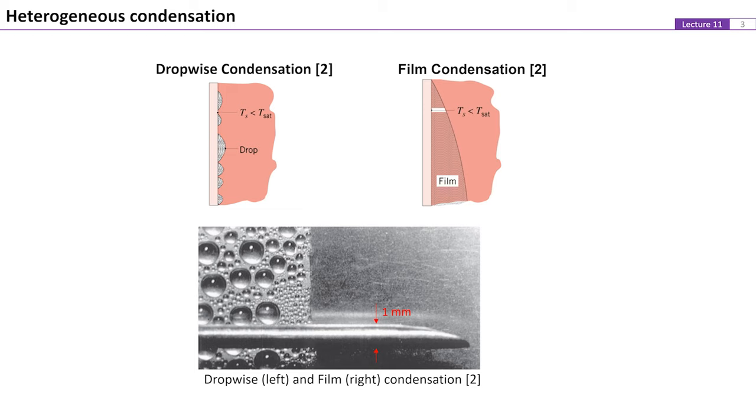In dropwise condensation, the surface is covered by liquid droplets ranging from a few micrometers to agglomerations that are visible to the naked eyes. In film condensation, however, the entire surface is covered by the condensate, which flows on the surface and acts as a resistance to heat transfer between the vapor and the surface.